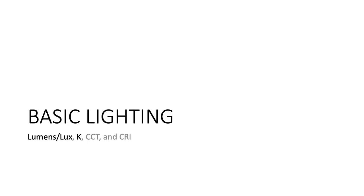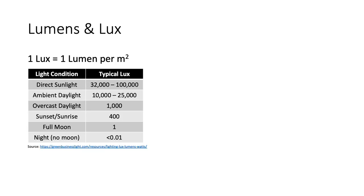The first topic of discussion is basic lighting parameters. These parameters include lumens, lux, K values, CCT, and CRI. These are extremely acronym-heavy and can be a little intimidating, but the most important aspects of the basic lighting parameters are lumens, lux, and the K values for your light bulbs. One lux is equivalent to one lumen per meter square. Lux is simply a measurement of light, just like inches is a measurement of distance.